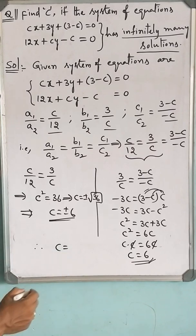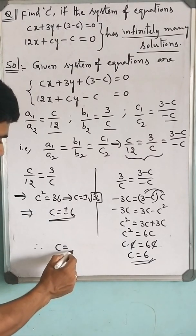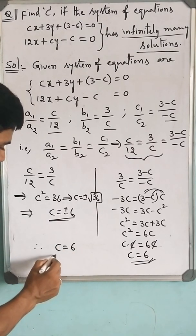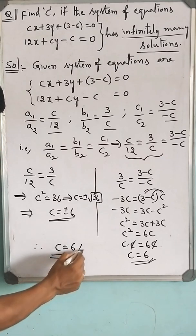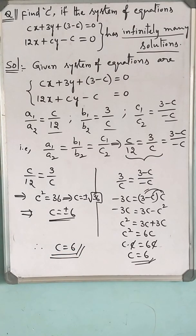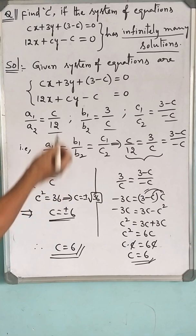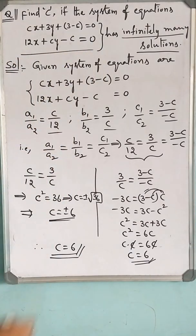Therefore, the C value is finalized as plus 6. So, this is the value which satisfies the given fact of the system. Thank you. I hope you understand.